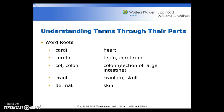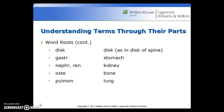Some other common word roots include: cardi for heart, cerebr for brain or cerebrum, col or colon for colon (a section of the large intestine), cranie for cranium or skull, dermat for skin, disc for disc as in the disc of the spine, gaster for stomach, nephr or ren for kidney, oste for bone, and pulmon for lung.